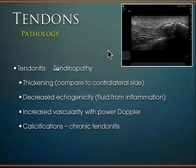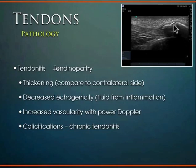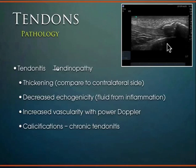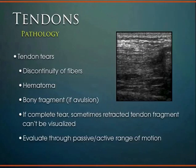Other changes include calcific tendonitis — typically heard about in the shoulder rotator cuff. Just like bone, the calcific changes appear as very thick, hyperechoic structures. You'll get deep shadowing below that very hyperechoic tissue because sound waves don't penetrate through. You can see normal tendon tissue alongside the calcific change — a nice example of pathology visible on ultrasound.